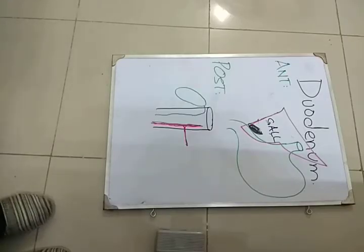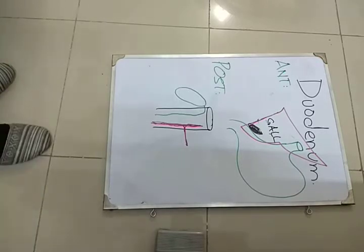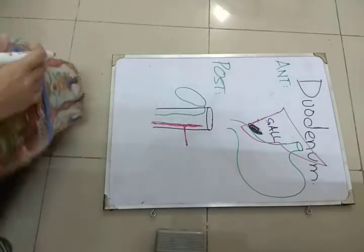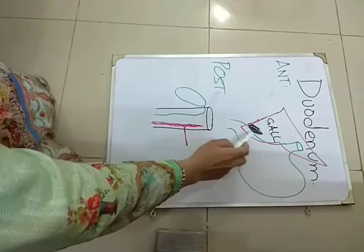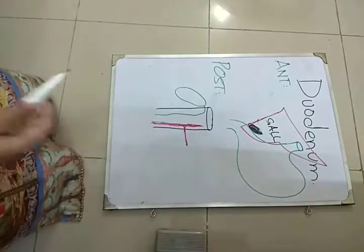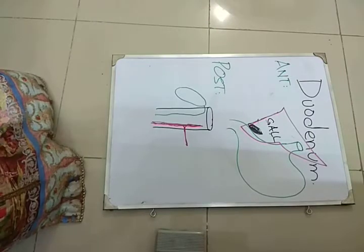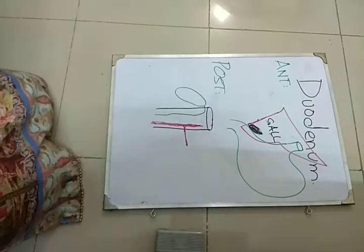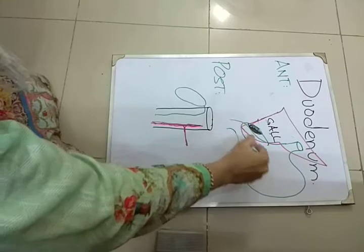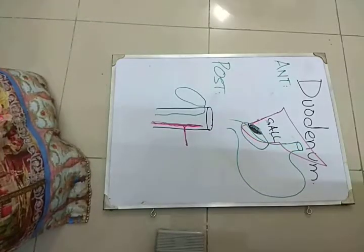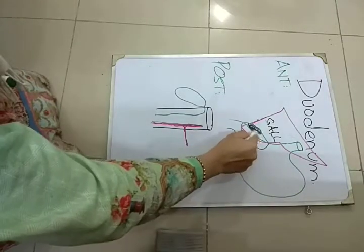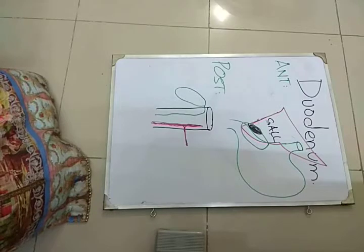Now the relations of the first part of the duodenum. Anteriorly, the structures present in front of the first part of the duodenum include the quadrate lobe of the liver, which is present anteriorly. Also anteriorly, the gallbladder is present. These are the anterior relations.